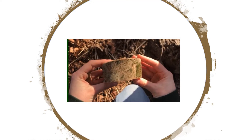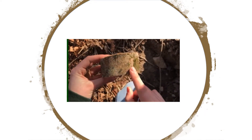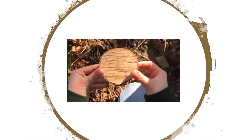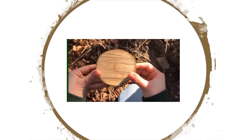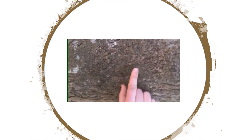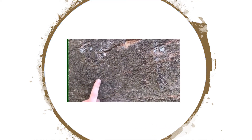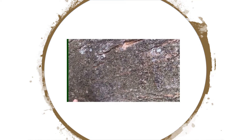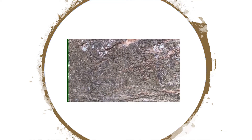This maple tree has smooth bark because it is less than 8 to 10 inches in diameter. If you look at this maple tree, it has vertical grooves, and this is what happens when the tree gets wider.